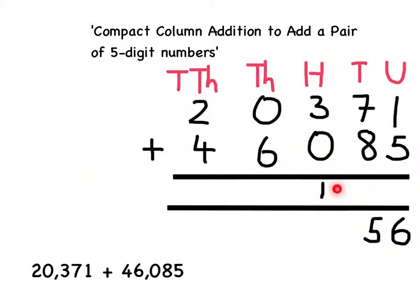Now I've got to add up my hundreds. 300 add 0 hundreds add 100. This adds up to 400 which I can show as a 4 at the bottom of the hundreds column.